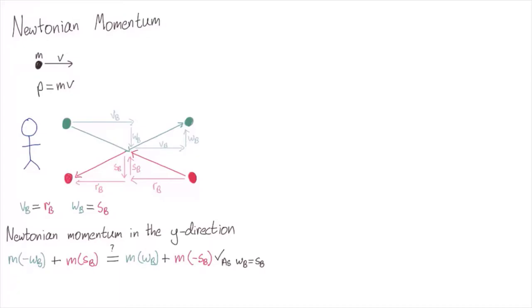So let's pick a frame. Suppose Alice starts off where the green ball starts off. She moves to the right with speed vB. In other words, she's matching the horizontal velocity of the green ball. Let's see how things look in Alice's frame.